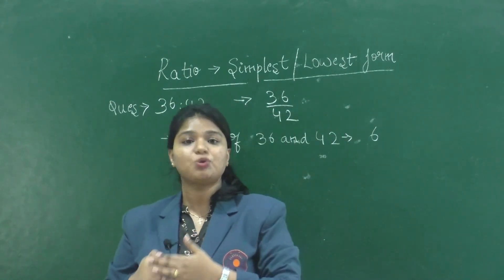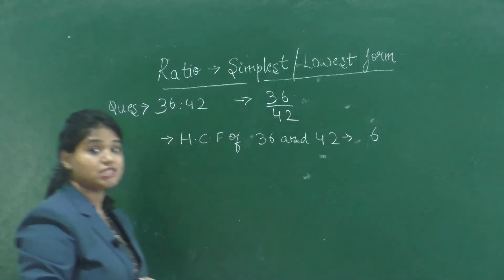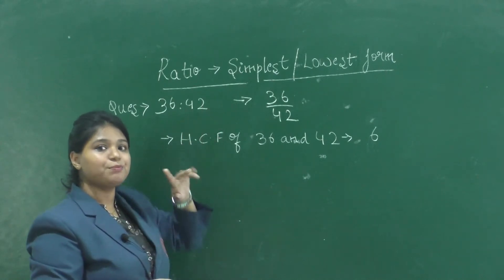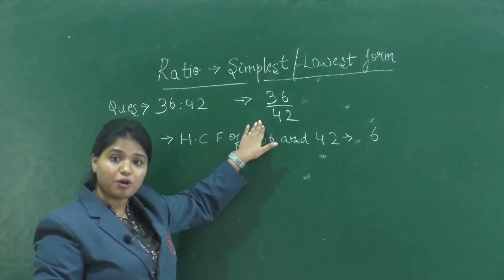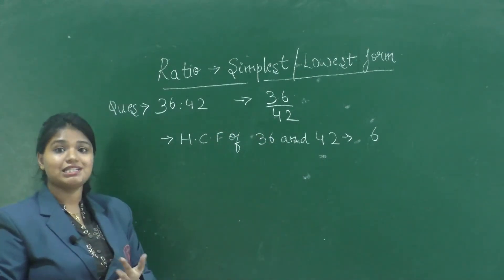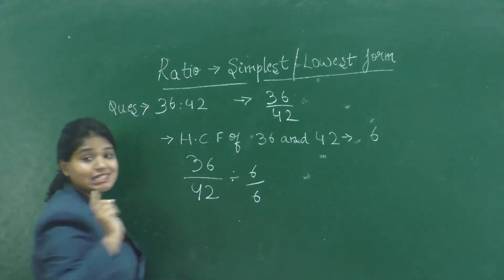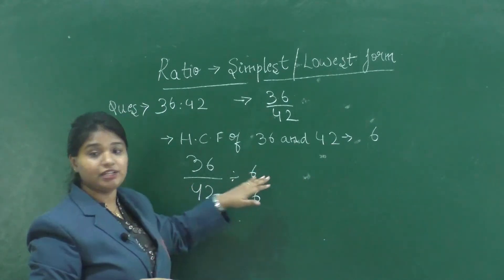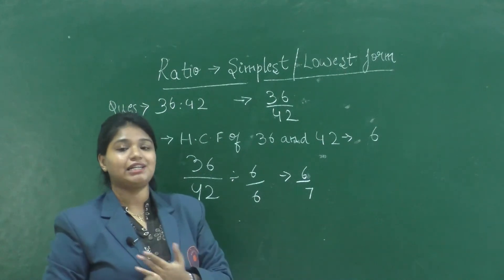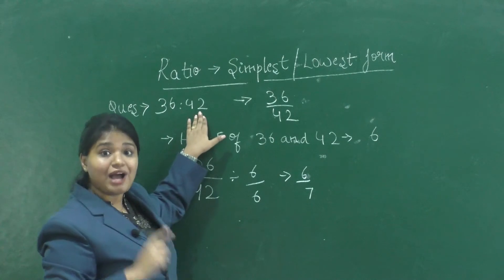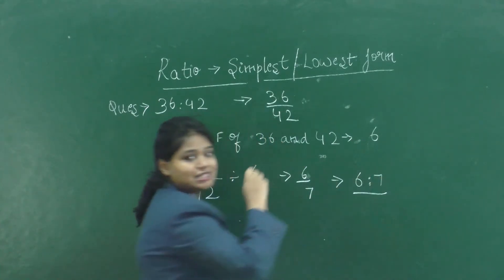A ratio is in its lowest form when the antecedent and consequent have no common factor other than one. To convert 36 is to 42 into its simplest form: write it as the fraction 36 by 42, then divide numerator and denominator by the HCF of 36 and 42, which is 6. So 36 ÷ 6 = 6 and 42 ÷ 6 = 7, giving us 6 is to 7.